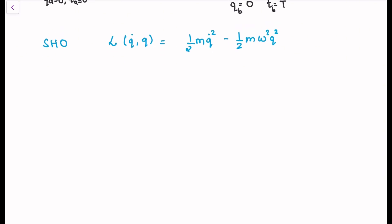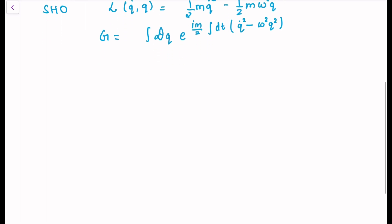Our path integral looks like the path integral over q — where q is always a function of t — and we write it explicitly as q-dot squared minus omega squared q squared. We are going to use a known result about Gaussian path integrals: if we are integrating over some path q and the form of the path integral has this structure, then the result involves the determinant of operator A to the power one-half.